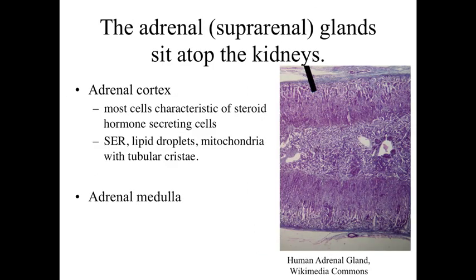The final endocrine organ we're going to look at in this series are the adrenal glands, also called suprarenal glands, located sitting atop the kidneys — one on each side. The adrenal glands are composed of an adrenal cortex around the outside and an inner adrenal medulla. The cells within the adrenal cortex are characteristic of steroid hormone-secreting cells — they're going to have lots of smooth endoplasmic reticulum, lipid droplets, and mitochondria with tubular cristae. Cells with mitochondria with tubular cristae are involved with steroid hormone synthesis and secretion.